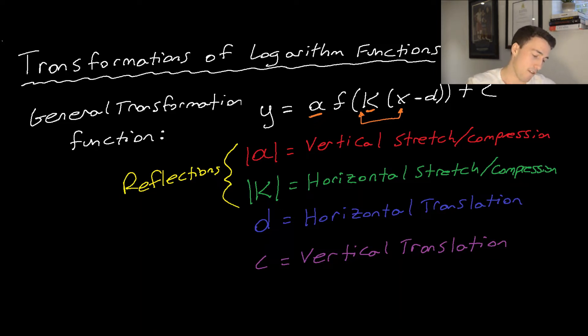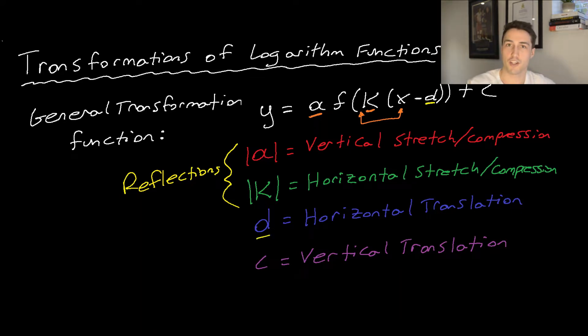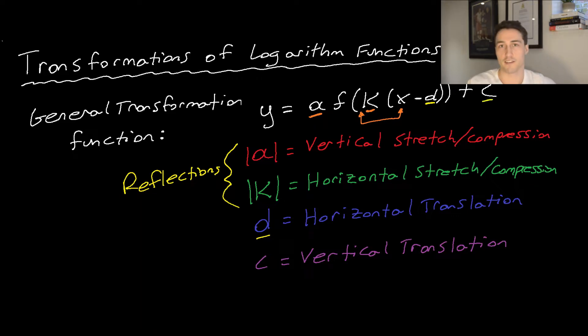Lastly, we have the transformations involving translation. d is the horizontal translation — shifting the graph left and right. And c is the vertical translation, shifting the graph up and down.